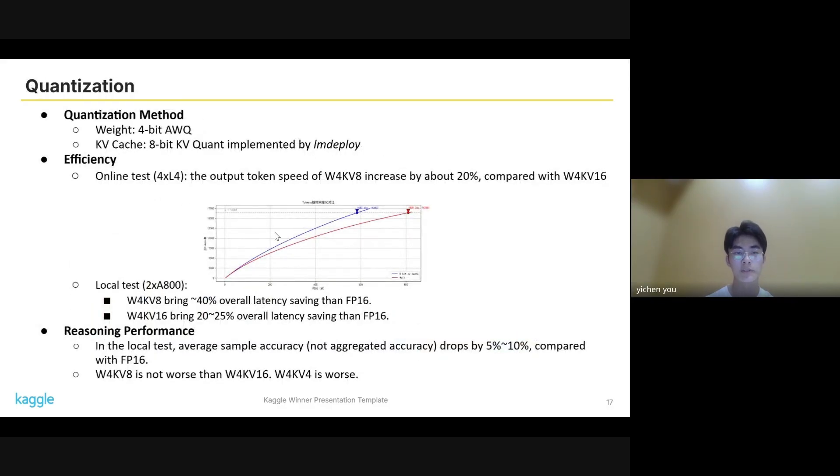For quantization, we used 4-bit AWQ quantization and 8-bit KV cache quantization implemented by LMDeploy. In our online test, we found the output token speed of W4KV8 increased by about 20% compared with W4KV16. For the reasoning performance in the local test, we found that the average sample accuracy drops by 5% to 10% compared with FP16. Finally, we chose W4KV8 for our final submission, which is not worse than W4KV16. W4KV4 was worse, so we did not choose it.